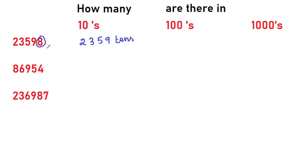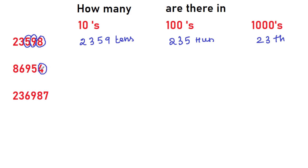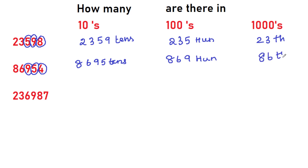How many hundreds are there in 23,598? For hundreds, you have to leave two digits. You leave two digits and write the rest — it is 235 hundreds. Same way, tell for thousands: how many digits should you leave? Leave three digits. So we can make 23 thousands. Now try the next problem on 86,950. How many tens? Leave one digit and tell the rest — 8,695 tens. How many hundreds? Leave two digits and tell — 869 hundreds. How many thousands? Leave three digits and write — 86 thousands.